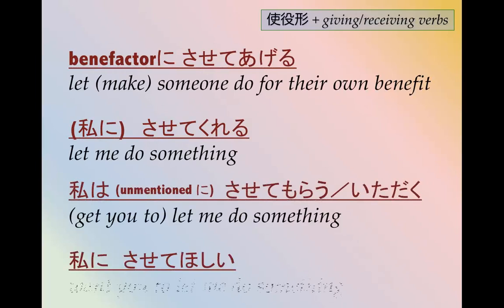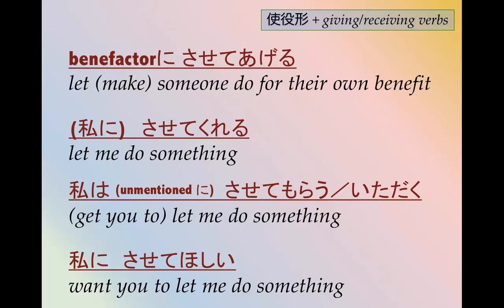Using the causative, the shihike, with giving and receiving verbs can actually change the meaning a great deal. If you make someone do something for their own benefit: させてあげる。 If you want to say 'let me do something': させてくれる、させてください。 To get someone to let you do something — politely saying 'I'm going to do something': させてもらう、させていただく。 いただく is the humble form of もらう. And 'I want you to let me do something': させてほしい。 The particles に or は follow the same pattern as with giving and receiving verbs: あげる、くれる、もらう、ほしい。